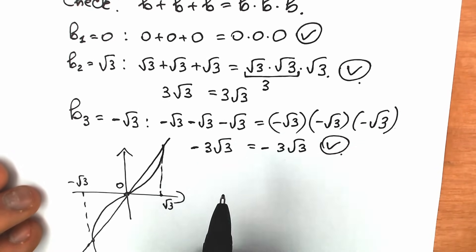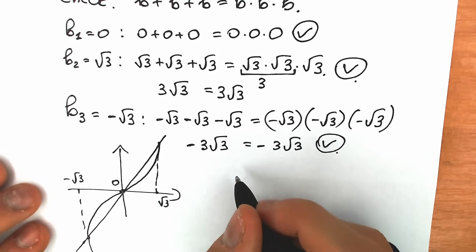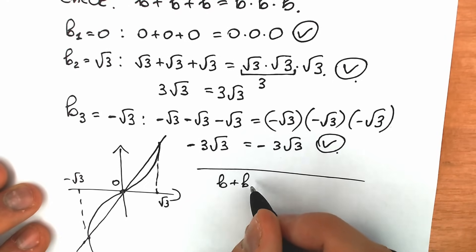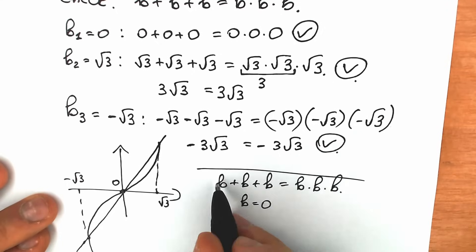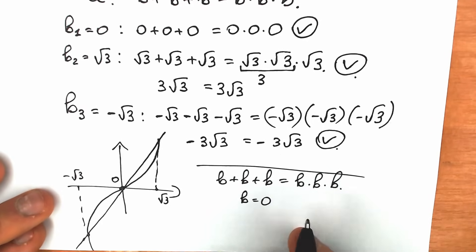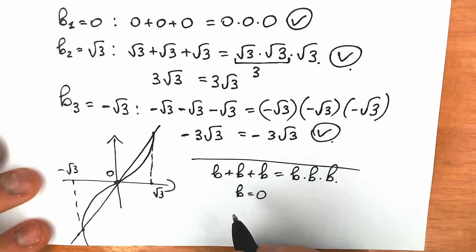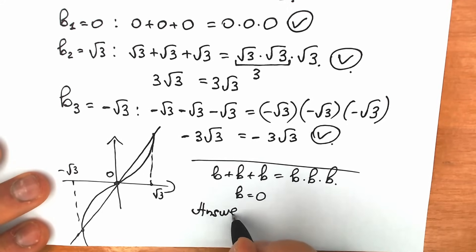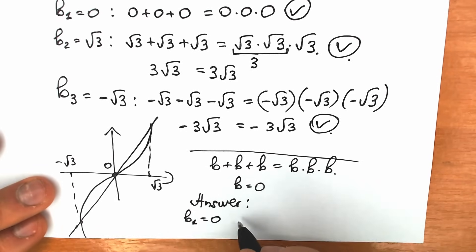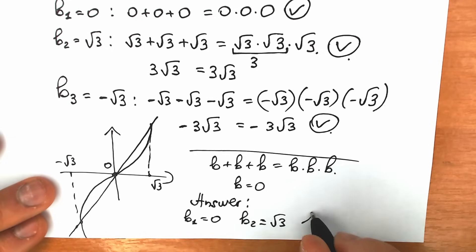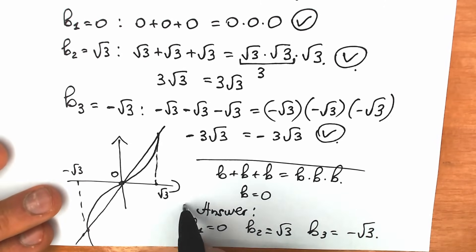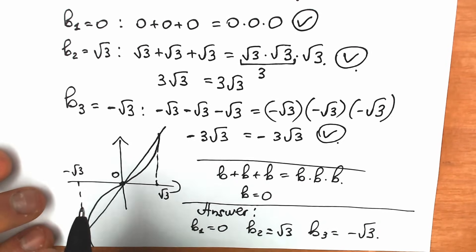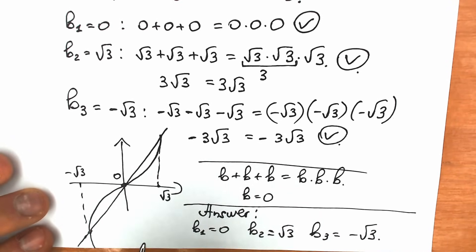This is a very tricky question because a lot of students — maybe 90% — write that b equals zero only. They prove it in three lines, which is a really bad approach in math. Try to solve this question completely and step by step. Our final answer: b₁ equals 0, b₂ equals square root of 3, and b₃ equals minus square root of 3. I hope you learned something new. If you need help, I have a lot of videos on my YouTube channel — write your question in the comment section. See you in the next video, have a great day!